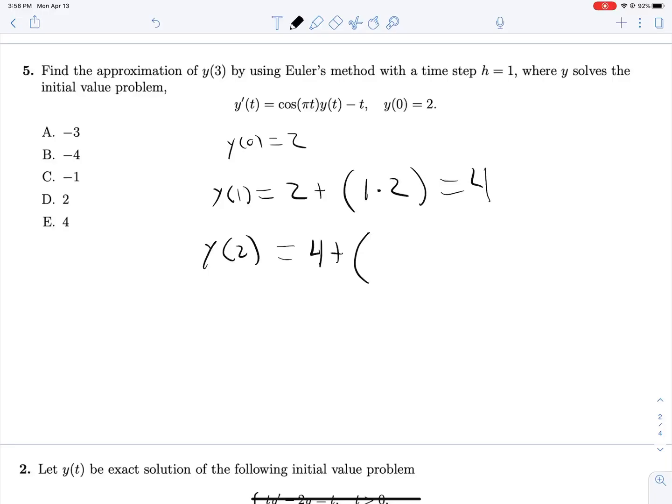And then y of 2 is 4 plus our time step of 1 multiplied by the cosine of, we're now dealing with y at 1 is 4. So the cosine of pi, which is negative 1, multiplied by y, which is 4, minus t, which is 1. So this is 4 minus 4 minus 1, that's negative 1.